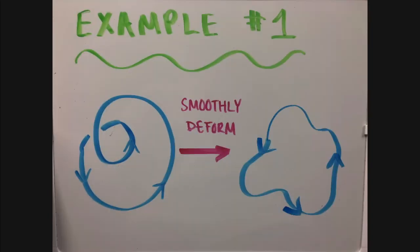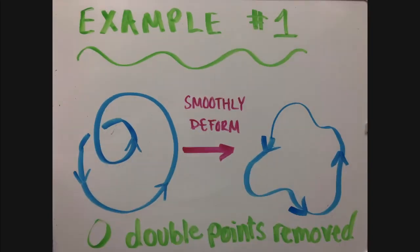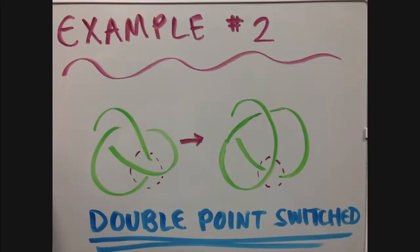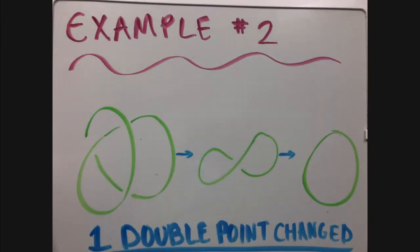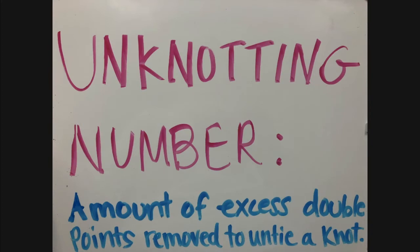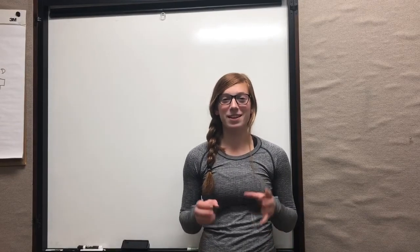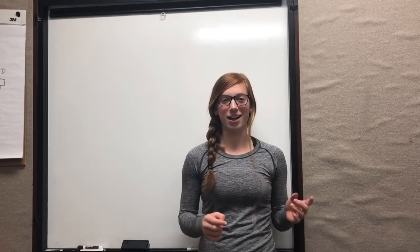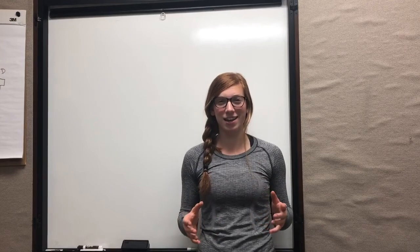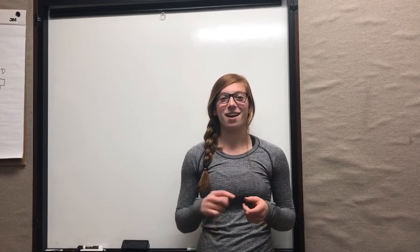In the first example, I don't have to remove any double points to untie the knot — I can just smoothly deform it. However, in order to untie the knot in example two, I must first remove a double point, then smoothly deform the knot. The amount of excess double points removed is called the unknotting number. So, relating back to our topoisomerases: the amount of times these enzymes are cutting and rejoining strands of DNA can be thought of as an unknotting number.